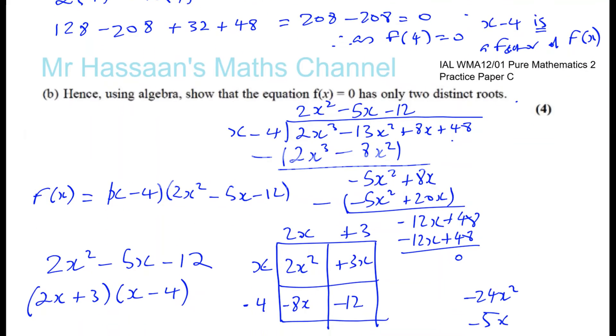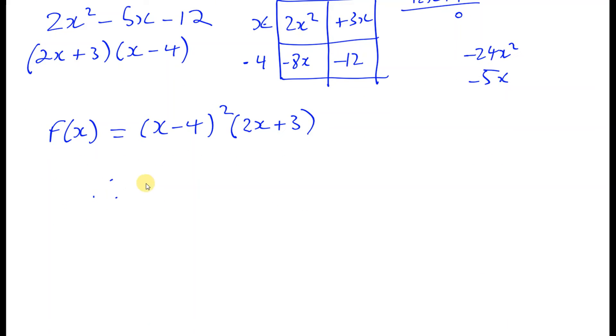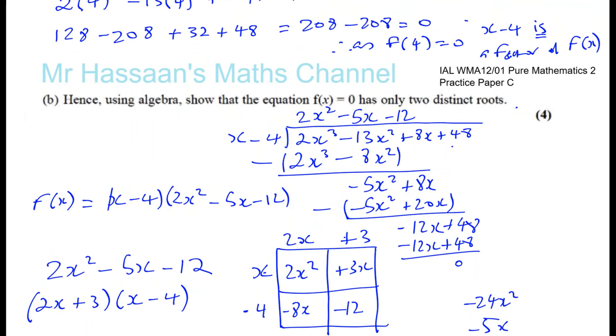So it says show that the equation has only 2 distinct roots. So therefore, x equals 4 is a repeated root. And the other one is x equals minus 3/2 is a root. Therefore, two distinct roots. So that's how we can prove that, because x equals 4 would be a repeated root, and x equals minus 3/2 is going to be a distinct root of its own. So therefore, there's two distinct roots altogether. That's part B.